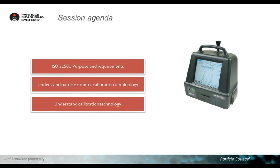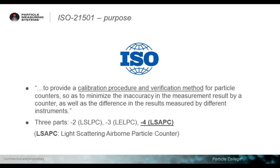Let's have a look at the main proposals and requirements of the ISO 21501. This sentence is written on the first page of the standard and clearly explains what the intention of the ISO committee was when they developed this standard. The proposal is to provide a calibration procedure and verification method for particle counters, as well as to minimize measurement inaccuracy and differences in results by different instruments. The goal of this standard is to harmonize the calibration procedure, the calibration methodology, and the standard used to adjust instrument counting performance to a universal method.